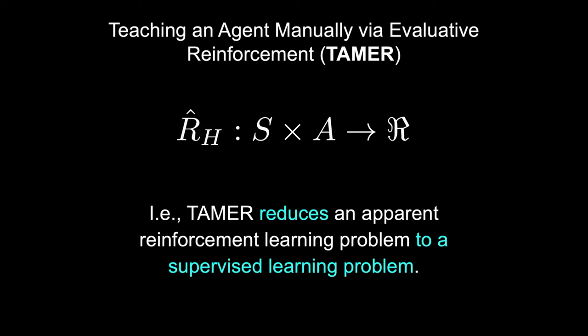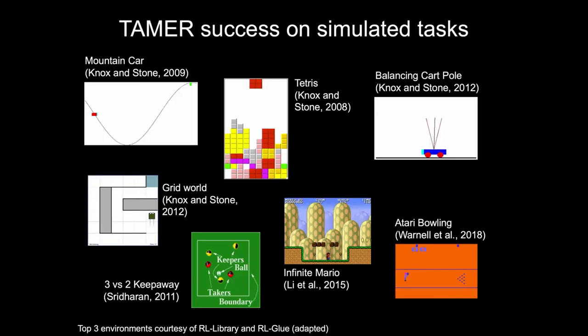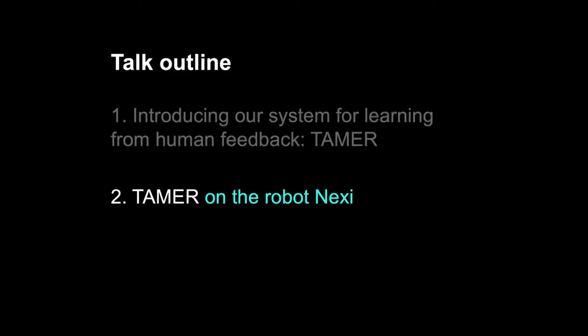The most salient and important feature of the TAMER framework is that it turns what seems to be a reinforcement learning problem into a supervised learning problem, and that's part of what allows it to learn more quickly in many cases than reinforcement learning using regular environmental reward. TAMER has been implemented successfully on a number of simulated tasks, some by us and some by other groups. Atari Bowling was an extension to deep learning — that's definitely an interesting paper to look at. None of those tasks are robotic, so a big question is: will TAMER work on robots?